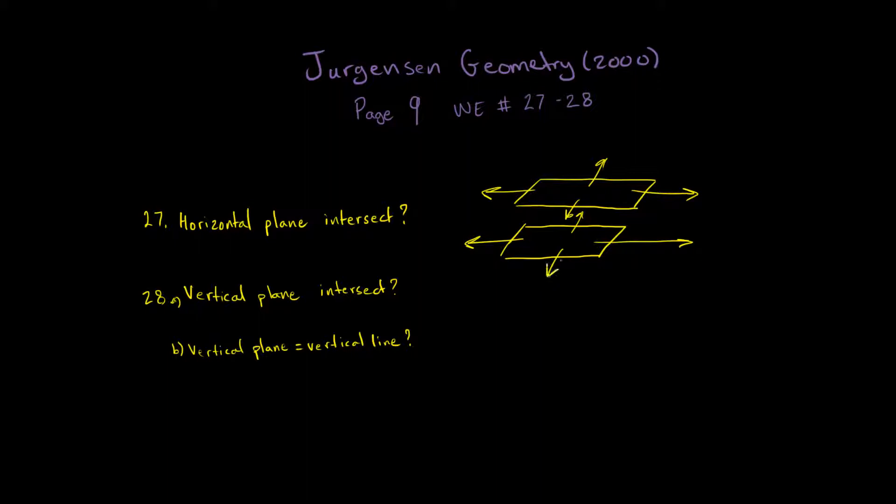But these planes, they never go up and down. So because one plane is on top of the other plane, these planes will never intersect each other. So can horizontal planes intersect? No.